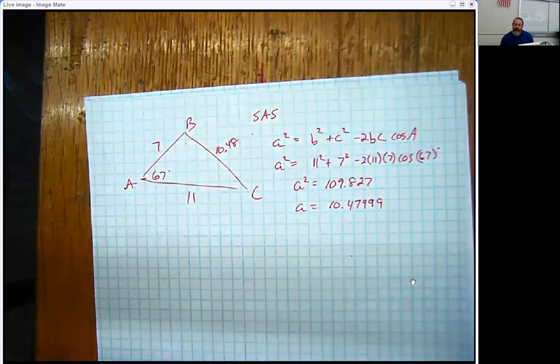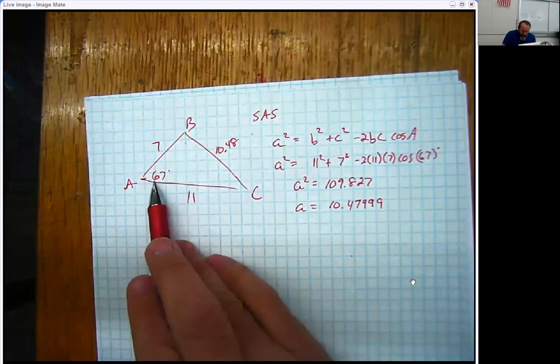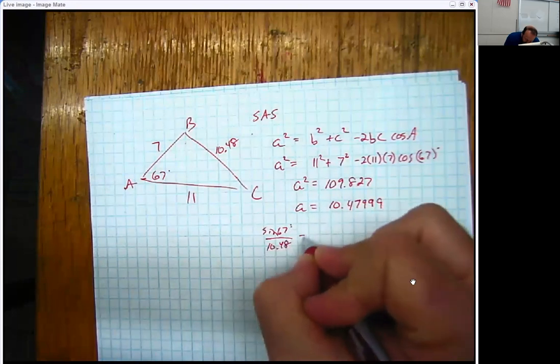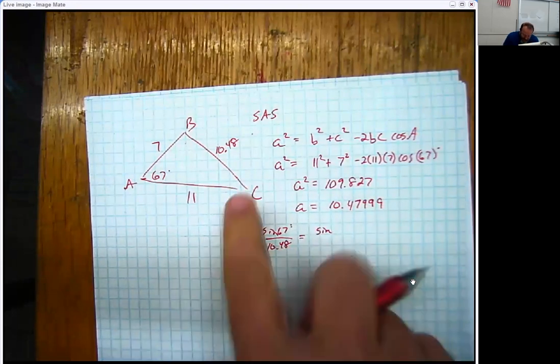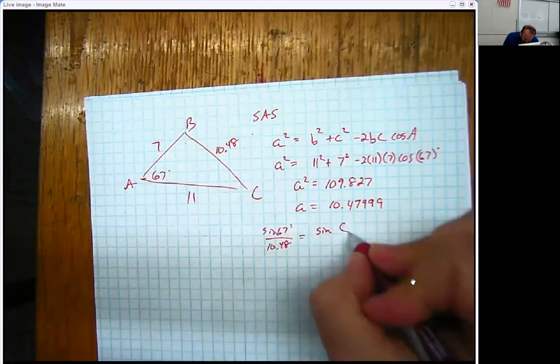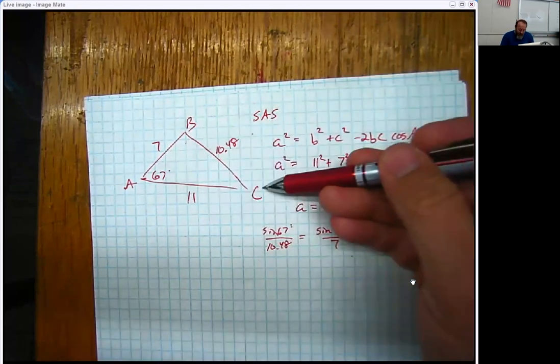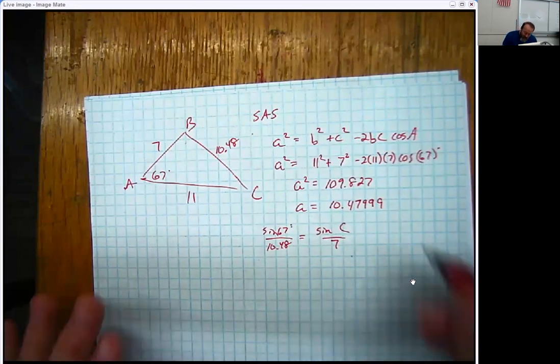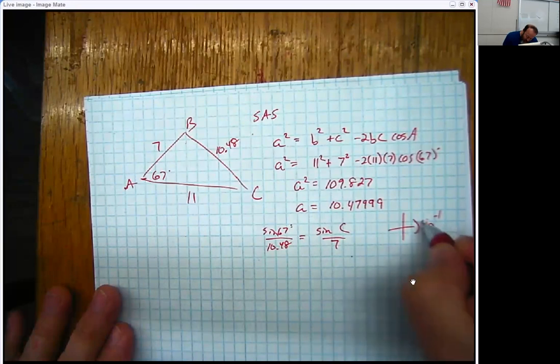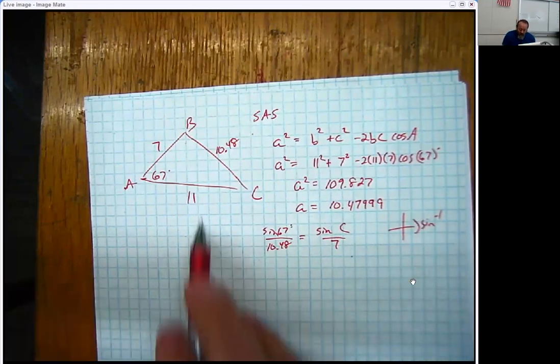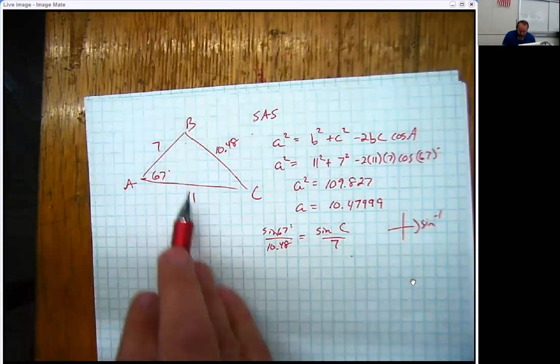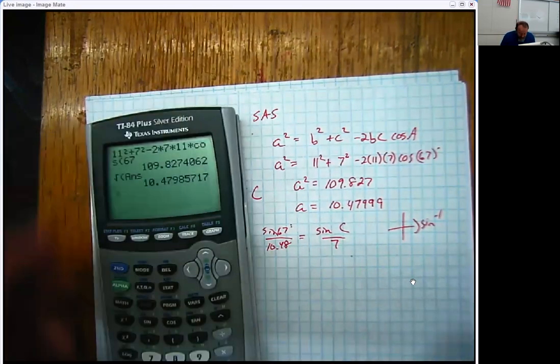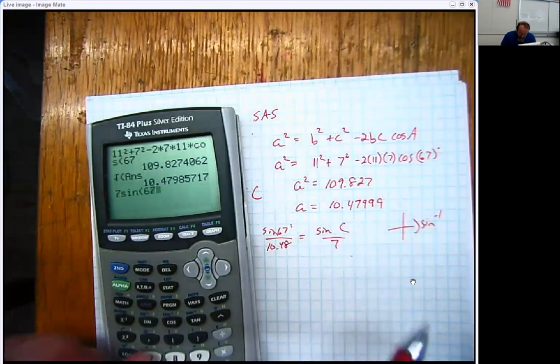Because I could say the sine of 67 is to 10.48 as the sine of, let's say, C down here is to 7. Now, notice that I kind of stop for a second because we've discussed before that the law of sines cannot give you an obtuse angle. Cannot do it because the inverse sine has to be in either the first or the fourth quadrant. So when I had to choose between finding angle C and finding angle B, I always go with the smaller of the two. Because once I have that, I wasn't necessarily going to do this whole problem, but I think maybe I should.